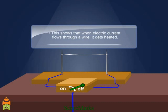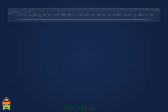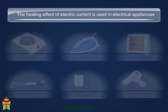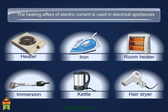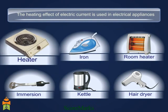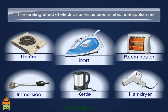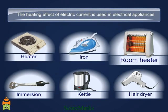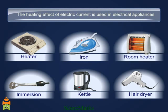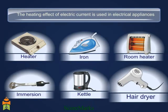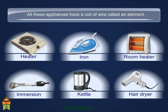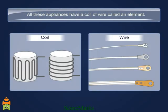This shows that when electric current flows through a wire, it gets heated. The heating effect of electric current is used in electrical appliances like electric heater, electric iron, electric room heater, immersion heater, electric kettle, and hair dryer. All these appliances have a coil of wire called an element.